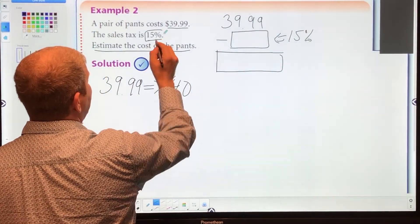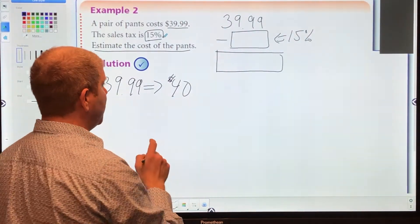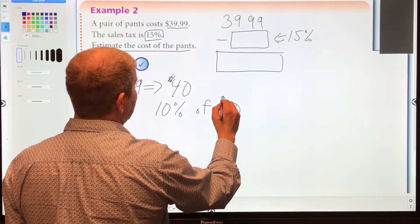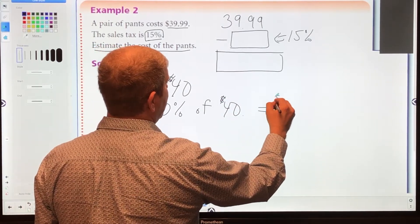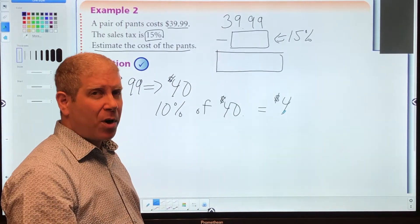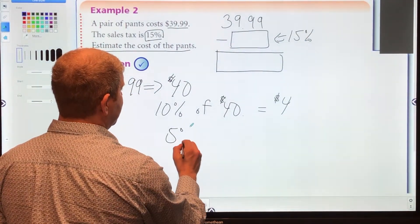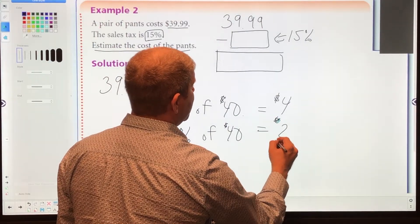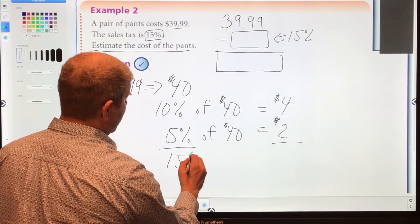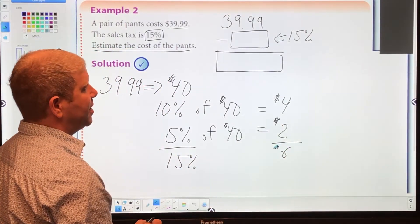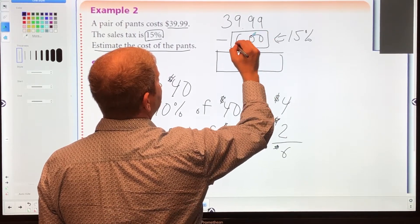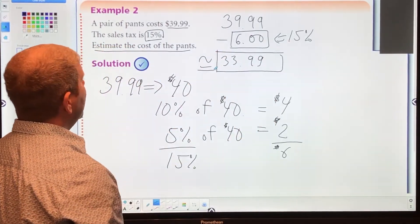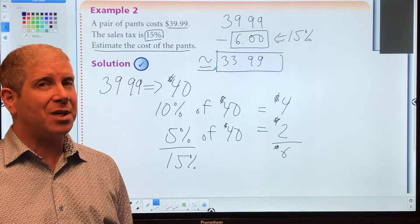We're going to find 15%. Well, 15% is hard to do in your head, but 10% I can do. I know that 10% of 40 is $4—just move the decimal over one place. Well if 10% is $4, then 5% of $40 would be half of 10%, or half of $4, which is $2. So my 15% tax would be adding these two amounts, approximately $6. So I'm going to subtract $6, and then I would have about $34. That's an approximation using mental math without a calculator.